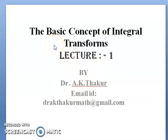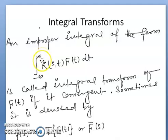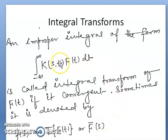Welcome students. In today's lecture we will discuss the basic concept of integral transform, starting from the definition. We will discuss how integral transform becomes the Laplace transform, Hankel transform, Mellin transform, and many other transforms. An improper integral of the form from minus infinity to infinity of k(s,t) f(t) dt is called the integral transform of f(t), if it is convergent. It is sometimes denoted by F(s), T{f(t)}, or F̄(s).